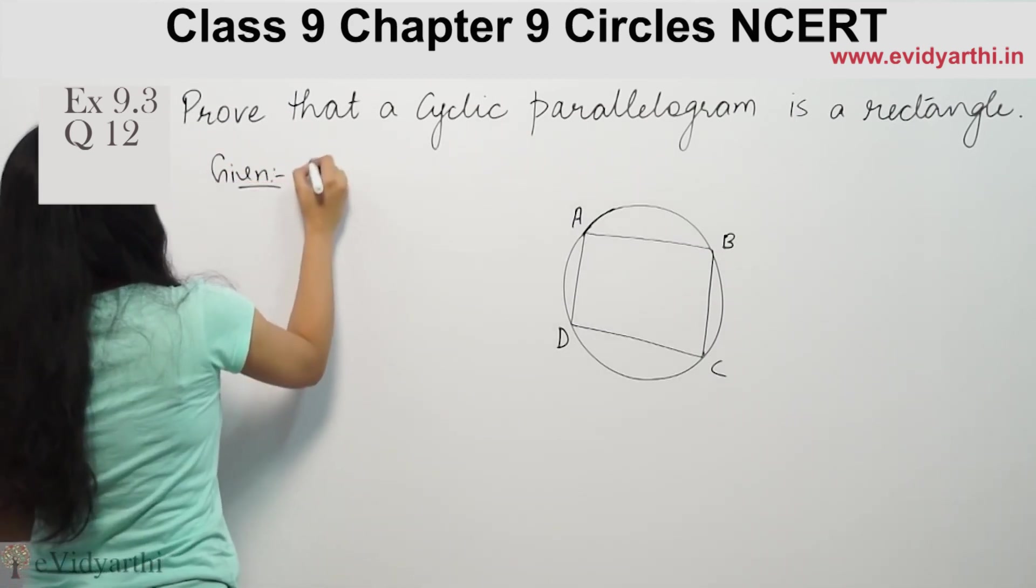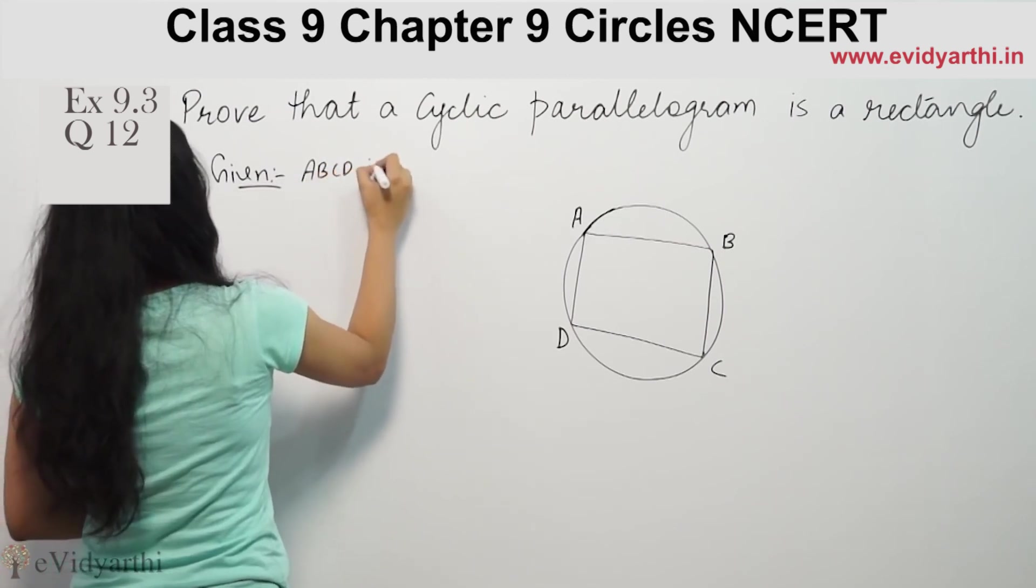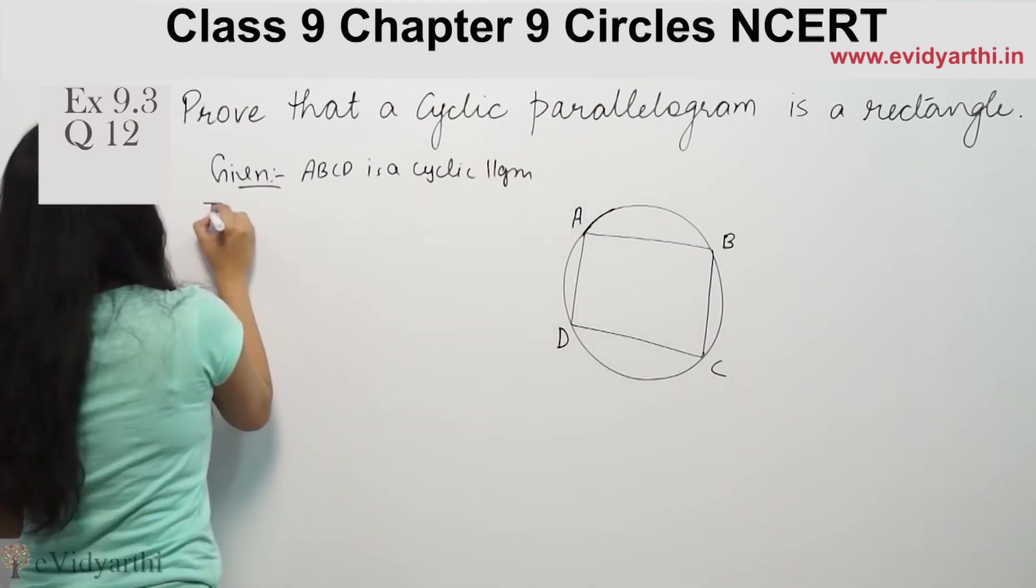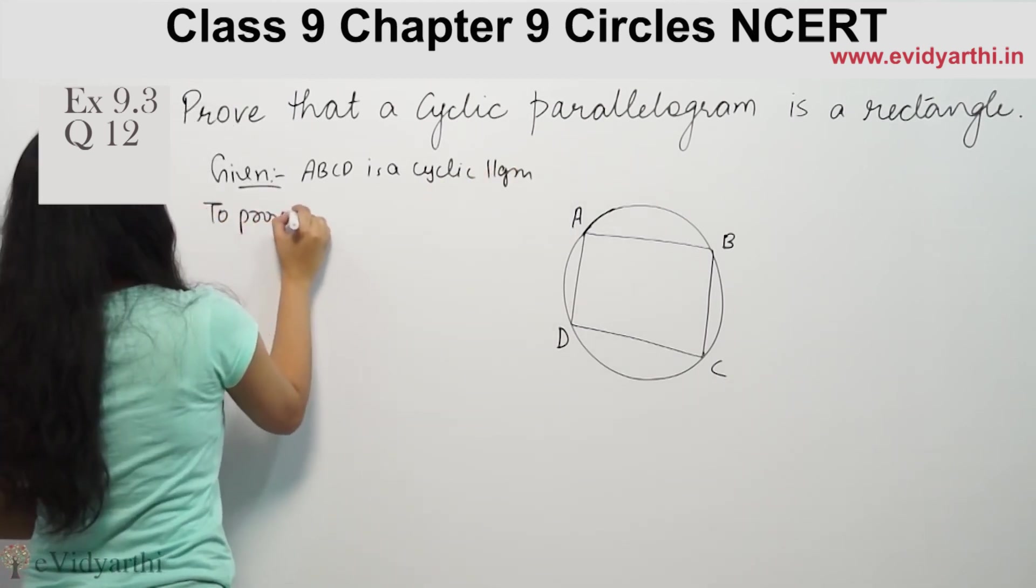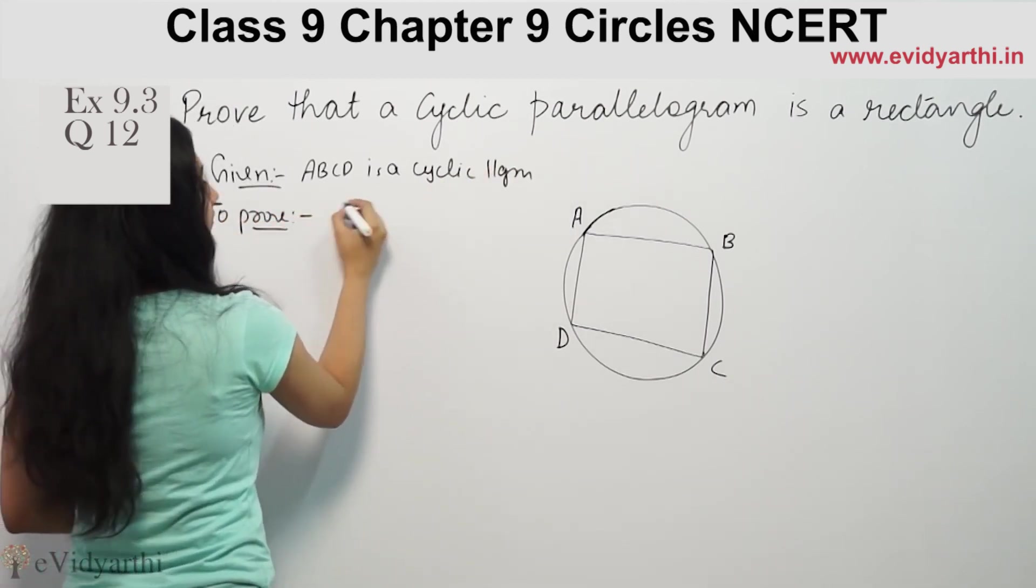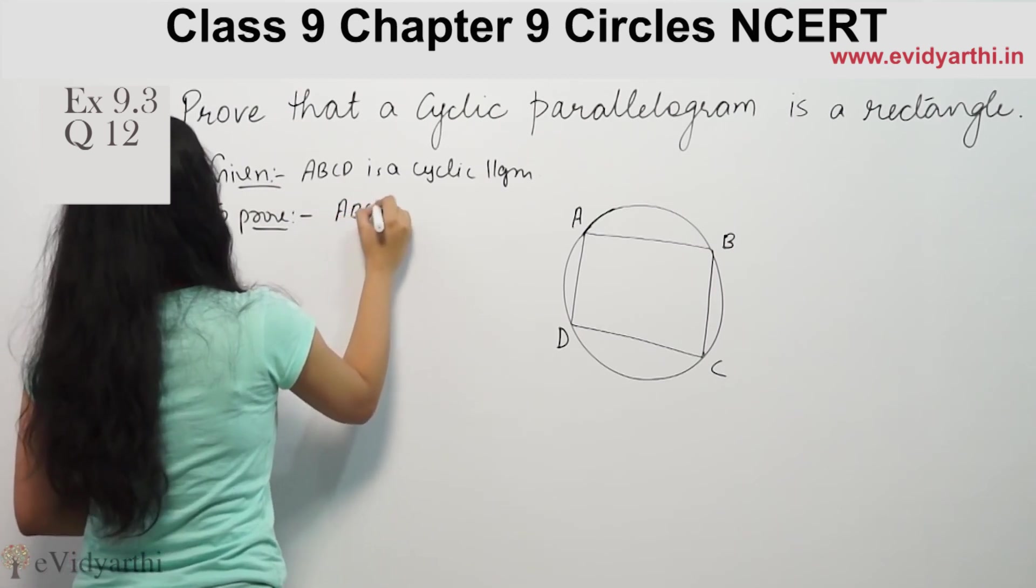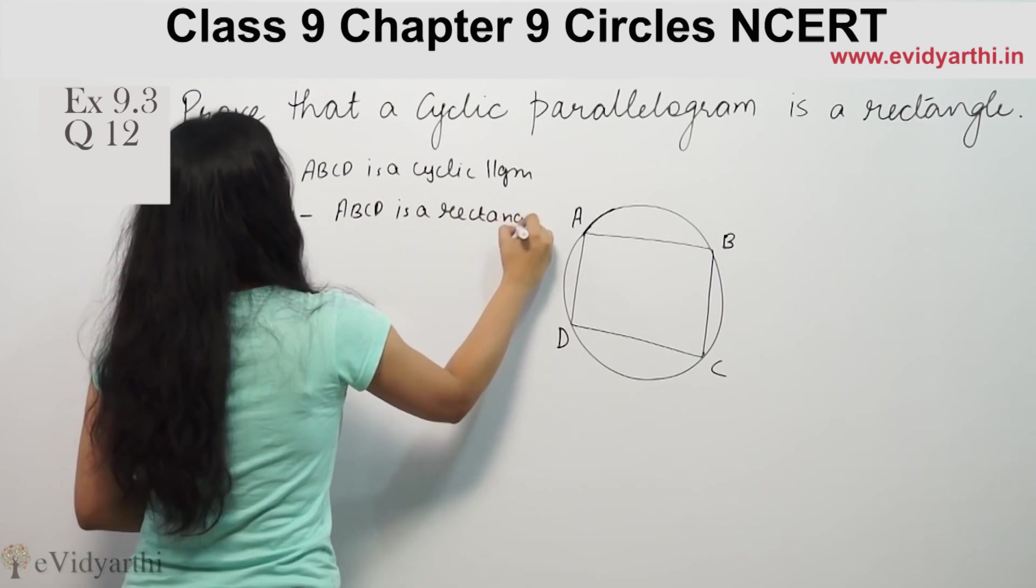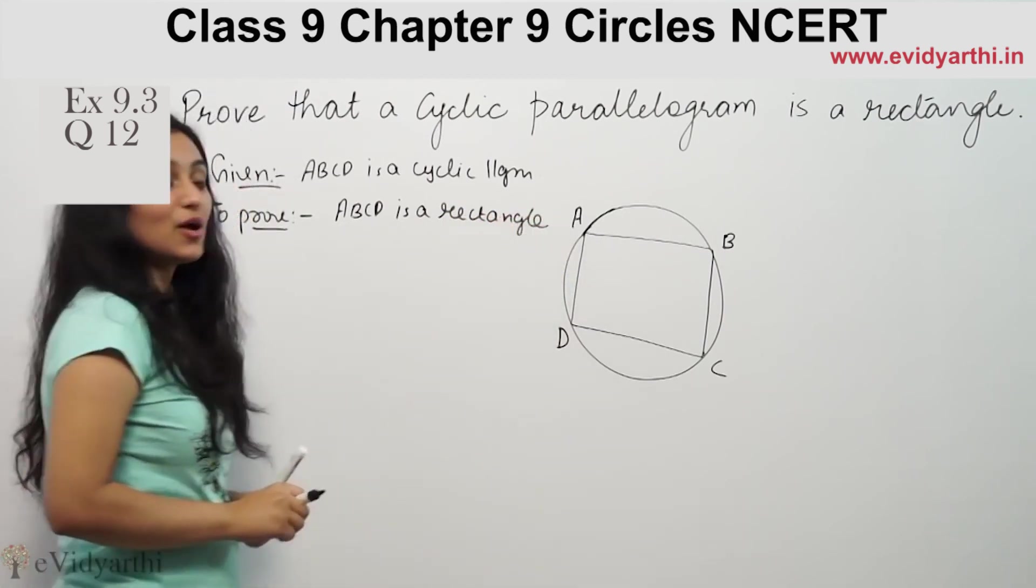First, ABCD is a cyclic parallelogram. To prove: ABCD is a rectangle. ABCD ko humay rectangle proof karna. Proof.